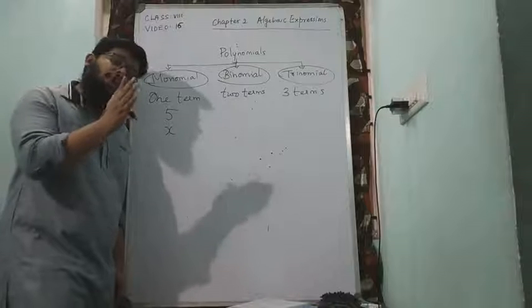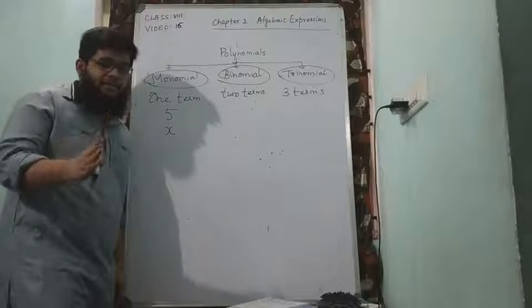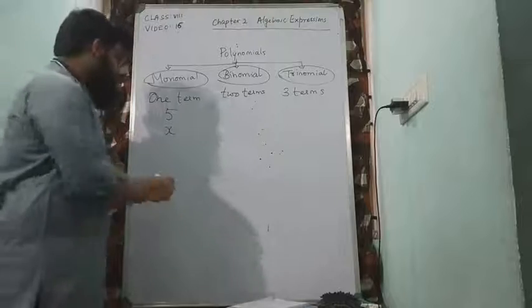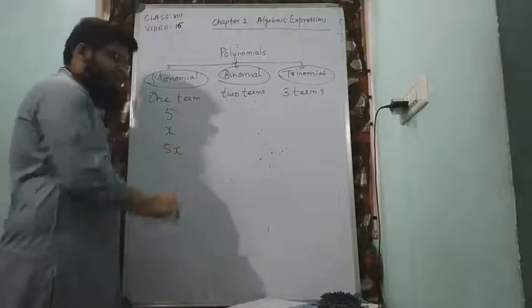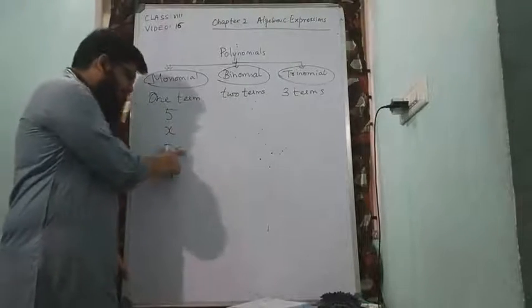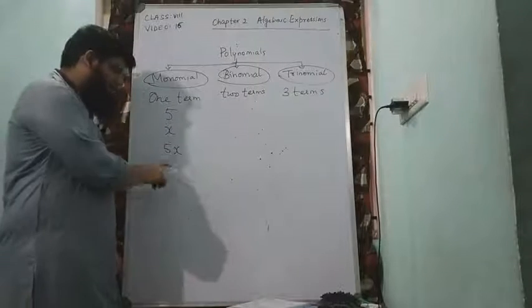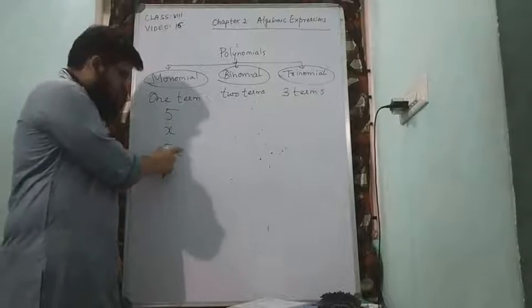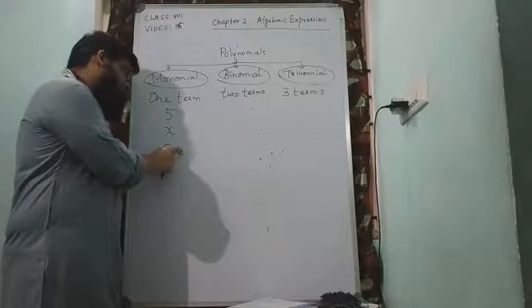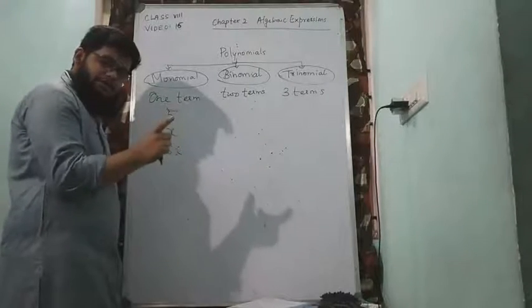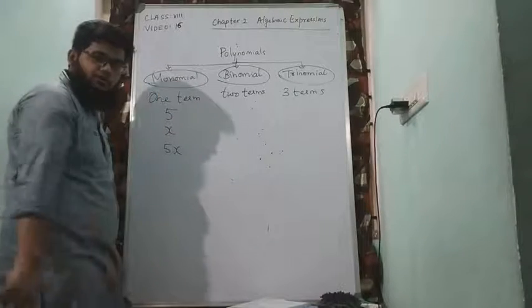So what is a term? A term can be only a constant or it can be a variable or it can be a combination of both. So let me combine 5 and x, it will become 5x. Should I treat this as two terms or one term? You can't think that 5 is one term and x is another term. 5 and x should be treated as one single term 5x, and that will be an example of monomial.